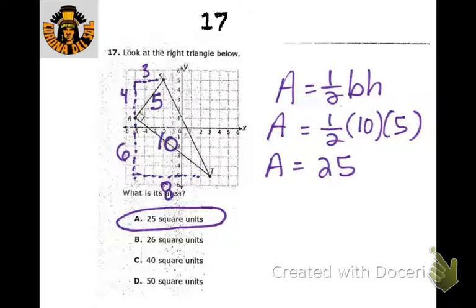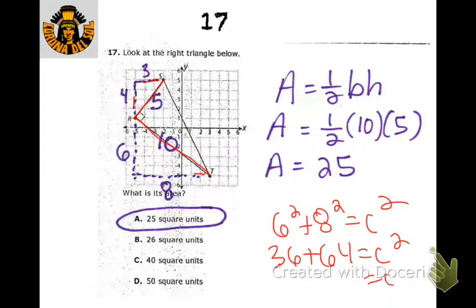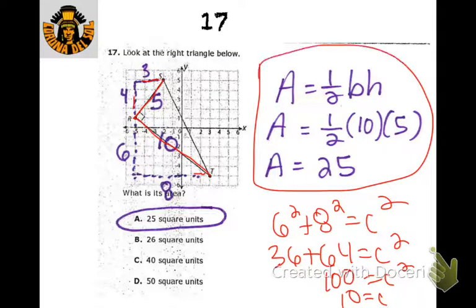This time we're looking for area. We have two diagonal lengths. We make a little right triangle — I've got 3 and 4, which gives me 5 again. Then this one turns out to be 6 and 8. Using the Pythagorean theorem: 6 squared plus 8 squared equals c squared, so 36 plus 64 equals 100, and c equals 10. Using the area formula — one half times base times height — 10 is the base and 5 is the height, so we get 25. For a right triangle, the legs are the base and height.